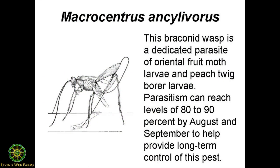A cousin of codling moth is the oriental fruit moth. Up north we have the lesser apple worm, but where peaches grow, it's going to be oriental fruit moth. By cousin, I mean it's also an internal feeder — it goes inside. Oriental fruit moth, as well as peach twig borer (more of a western pest), is parasitized by a braconid wasp called macrocentrus, which can knock back as much as 80 to 90% of this moth. That's a huge ally to have in place.